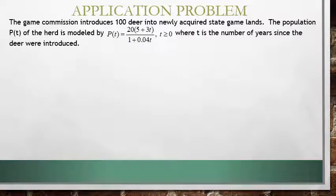Now let's look at an application of rational functions. The game commission introduces 100 deer into newly acquired state game lands. The population P(t) of the herd is modeled by P(t) = 20(5+3t)/(1+0.04t), where t is the number of years since the deer were introduced and t must be greater than or equal to 0.